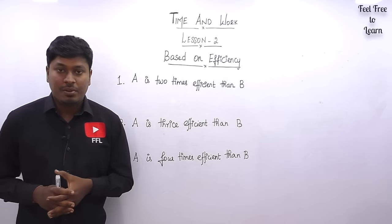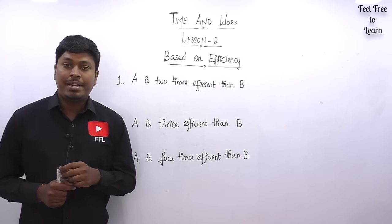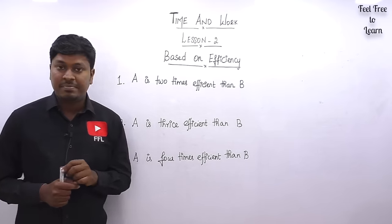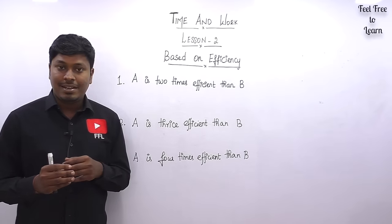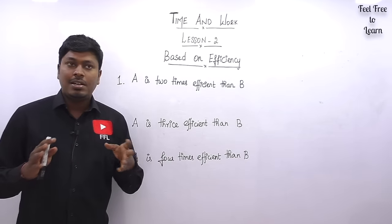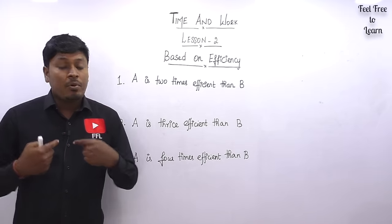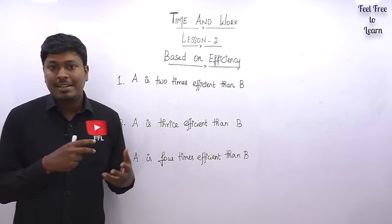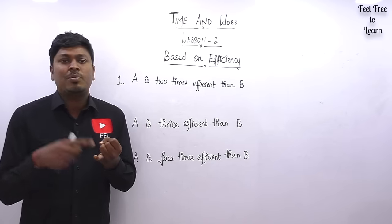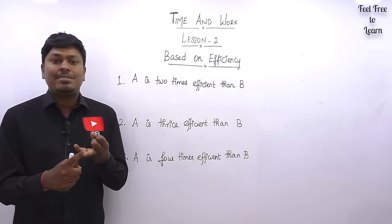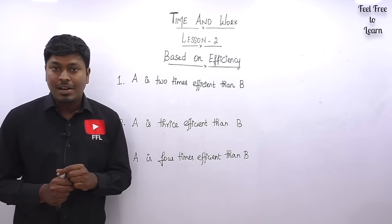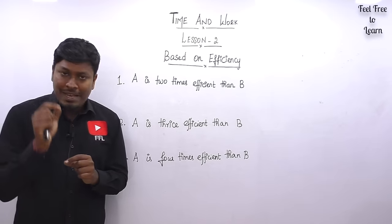Thanks for being here. In this lesson number two on the topic of time and work, we are going to concentrate on one of the most important concepts — problems based on efficiency. Everyone knows what efficiency means: more efficient or less efficient. For example, if you are completing a task in 10 days and I am more efficient than you, I would take definitely less than 10 days. More efficient means more speed; less efficient means less speed.